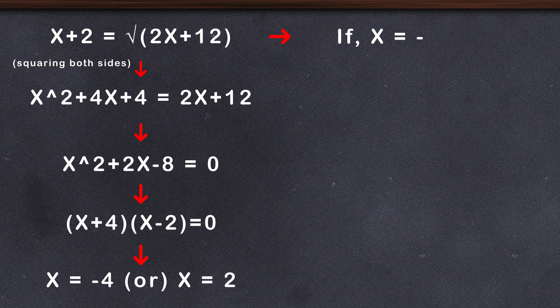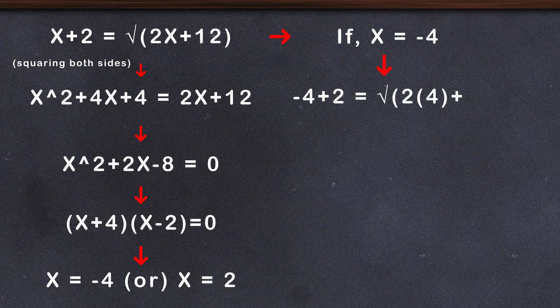But if we put -4 in the initial equation, it does not work. -2 will equal √4 and -2 then will equal 2. Well, where did we go wrong? To understand this, we must understand a concept called degrees of an equation. The degree of an equation is the highest exponent of a variable in an equation.